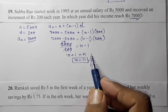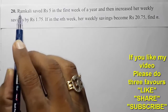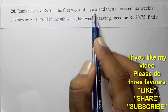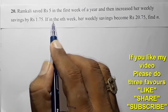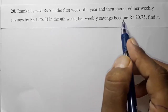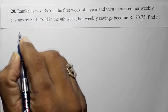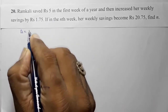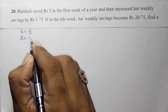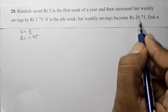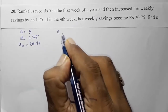Moving to the last question, Question 20: Ramkhali saved ₹5 in the first week of the year and then increased her weekly savings by ₹1.75. If in the nth week her weekly savings become ₹20.75, find n. So here a = ₹5 (first week savings), d = ₹1.75 (weekly increase), and an = ₹20.75.